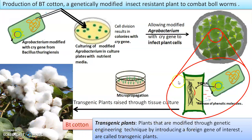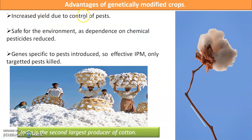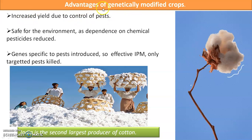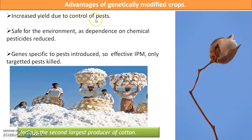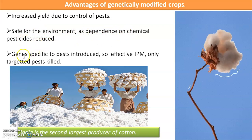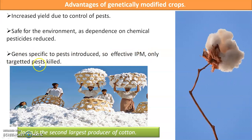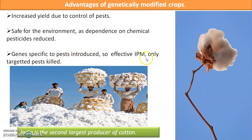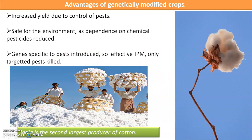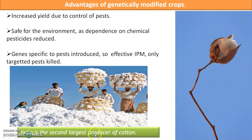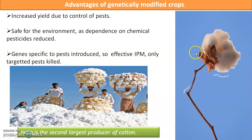This is how BT cotton, a transgenic plant, is produced. Advantages of genetically modified crops include increased yield due to control of pests, safety for the environment due to no dependence on chemical pesticides, and genes specific to the pests are introduced, so only the targeted pests are killed while beneficial insects are not harmed — this is integrated pest management. BT cotton was introduced in India around 2002 and adoption increased exponentially; India is now the second largest producer of cotton.